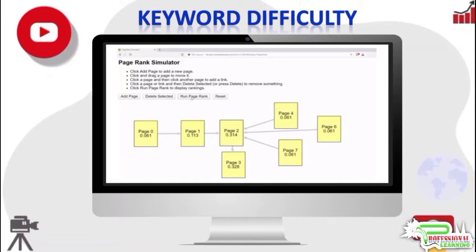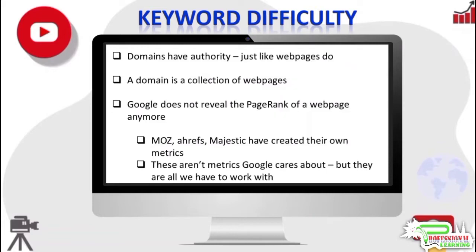This is a very simplistic explanation of the PageRank algorithm, but at least a basic understanding of PageRank is essential to understand concepts like page authority and domain authority. Just like every page has some level of authority, a domain also has a certain level of authority — after all, a domain is just a collection of individual web pages. Since Google no longer reveals the PageRank of a web page, companies like moz, ahrefs, and majestic have created algorithms that compute these metrics. You should know that these are not metrics Google cares about — they are metrics created by other companies and may or may not be close to Google's own metrics.